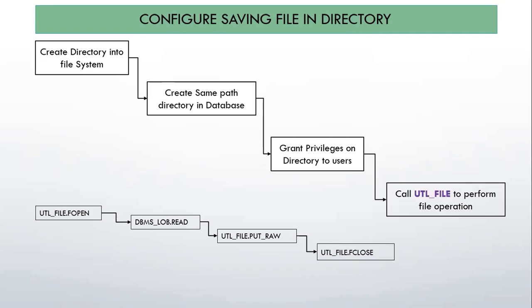If you are planning to develop the document management system, there are some steps you need to follow. The most important step is that there must be some directory existing where you will save your file. So the first step is to create a directory in the file system — and file system means any space: it could be cloud, your local server, separate file storage, or some other space accessible in your Apex environment. To create the link between the physical storage and our database, we need to define the database directory with the same path. Once the directory will be created from the SYS user, we need to give grants to our privileged schema user.